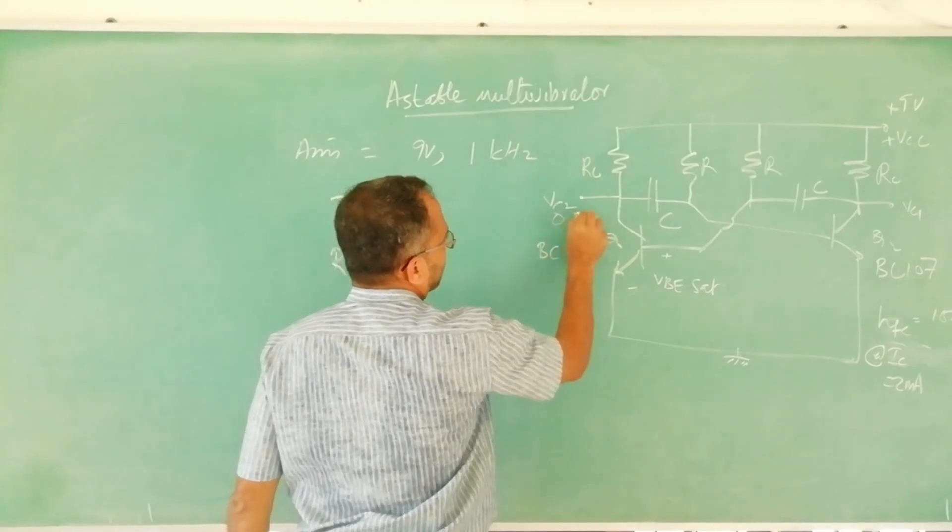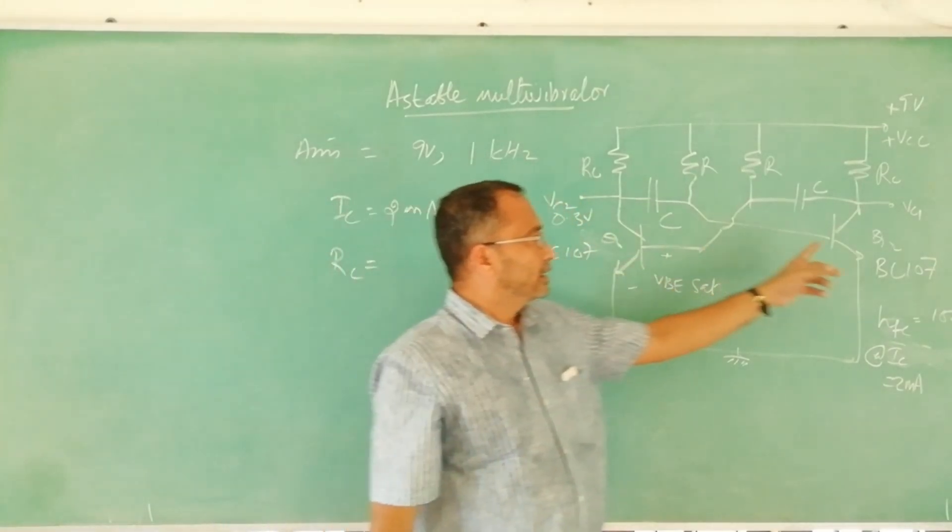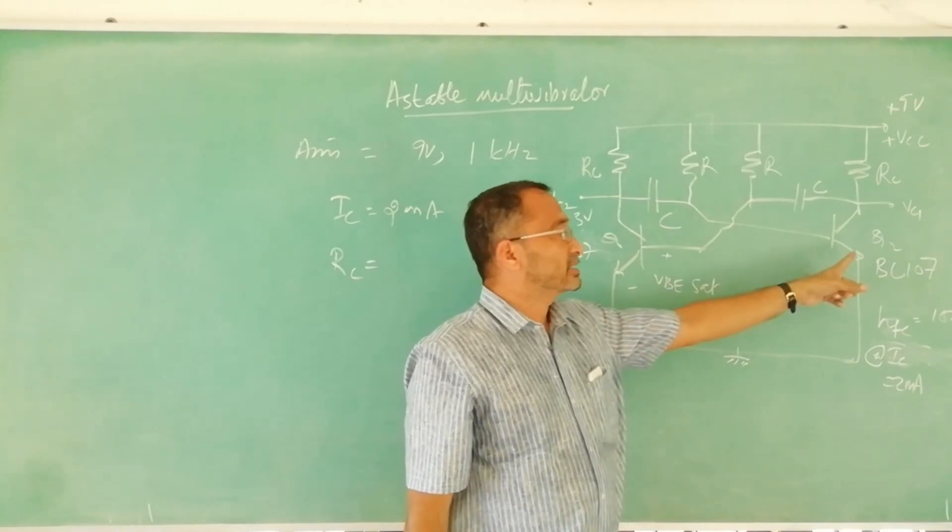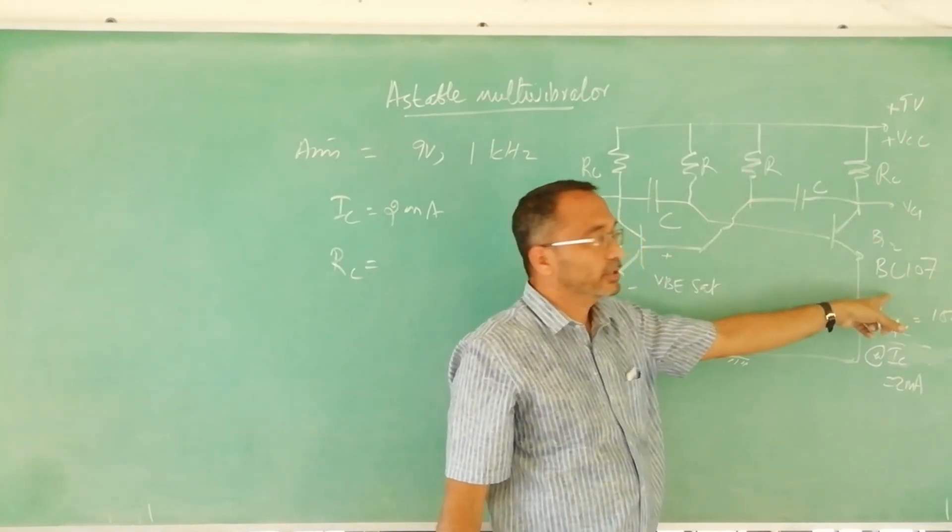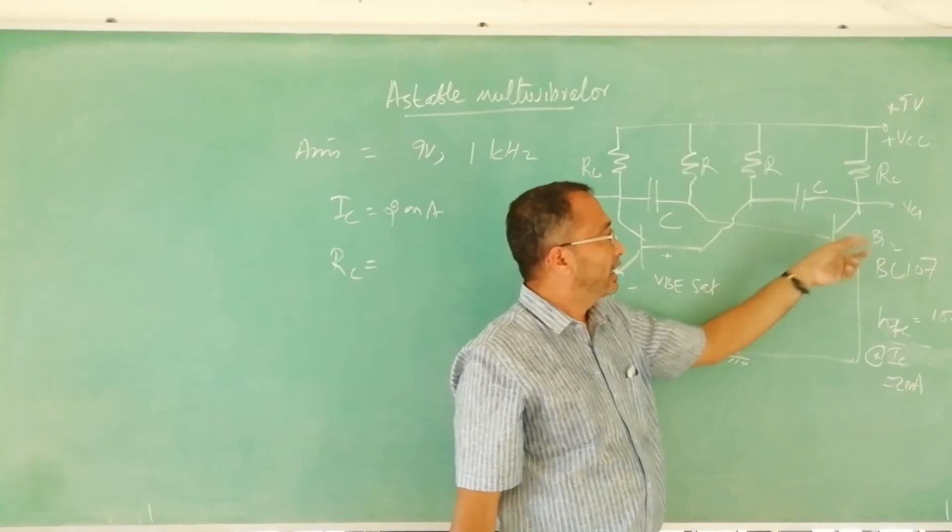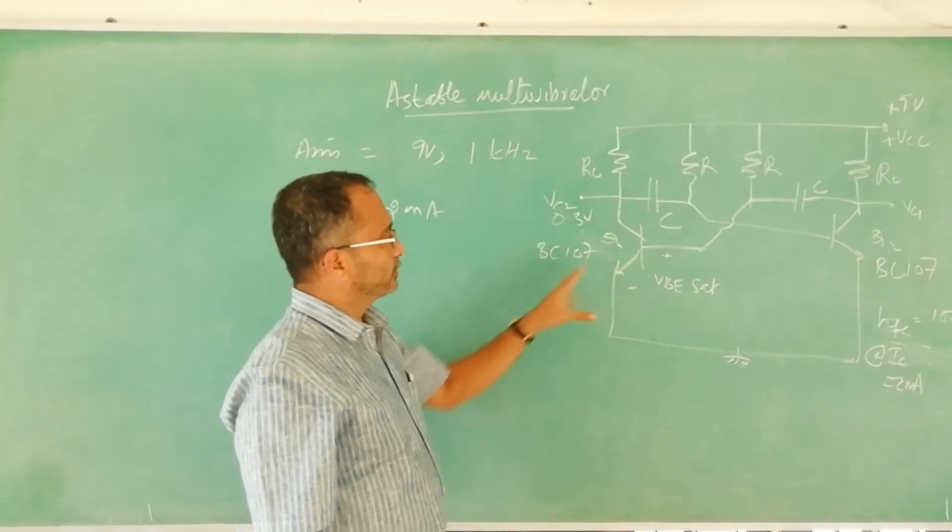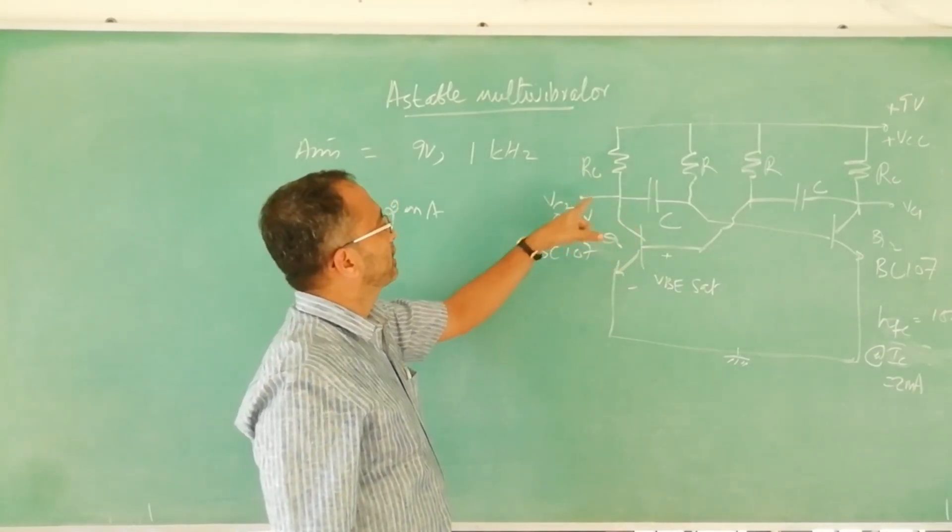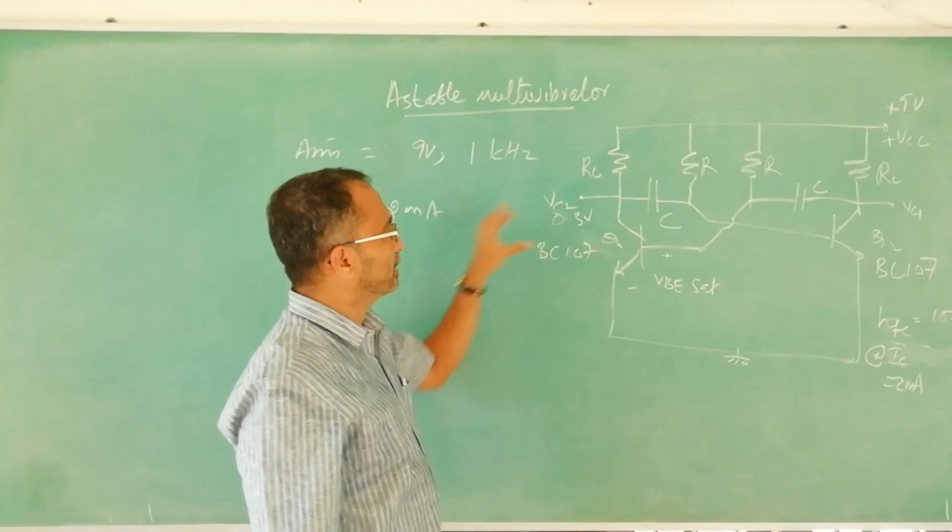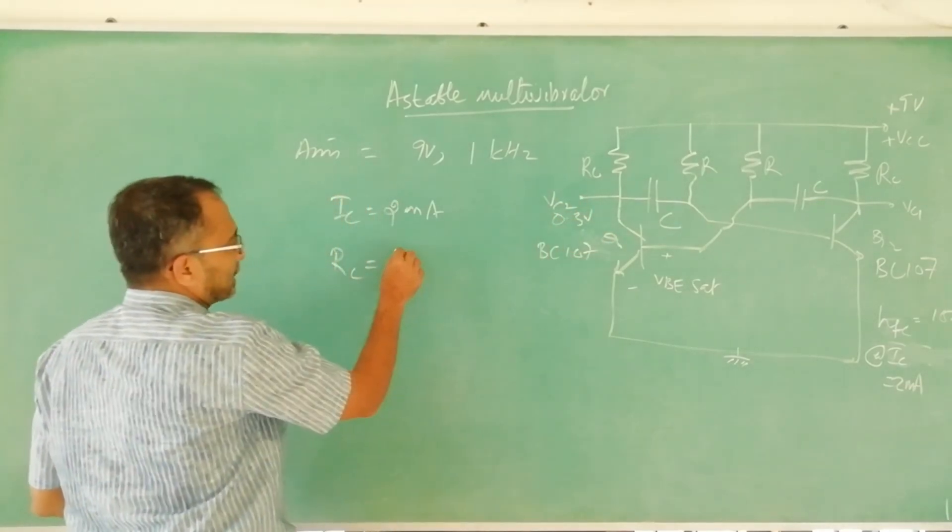At that moment when this transistor is on, this transistor will be off. There won't be any IC flowing, IC will be zero and this will be a very negative potential and this will be a high voltage. So presently when IC is flowing through, this is on and current is 2 milliampere and potential at this point is plus 0.3.